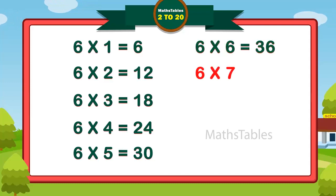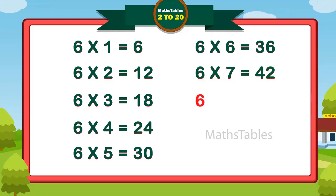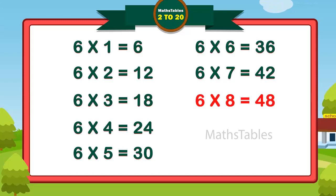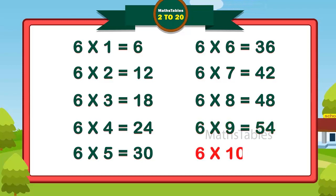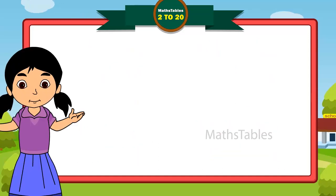6 sevens are 42. 6 eights are 48. 6 nines are 54. 6 tens are 60.